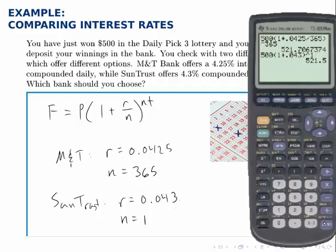So, the first account, the account with M&T Bank, wins out by a little bit, about $0.21. So, it's not a dramatic difference, but of course, if you deposited more, the difference would be more dramatic. But, you see that even with a slightly lower interest rate, the fact that it's compounded more often makes M&T's account grow faster.